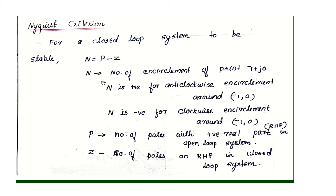In the Nyquist plot, we check encirclements of the point minus 1 plus j0 on the real axis. The imaginary term is zero, so the critical point is minus 1. N is the count of encirclements: clockwise encirclements are positive (negative N), anti-clockwise encirclements are negative (positive N).